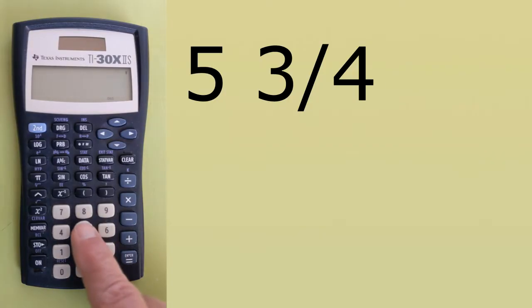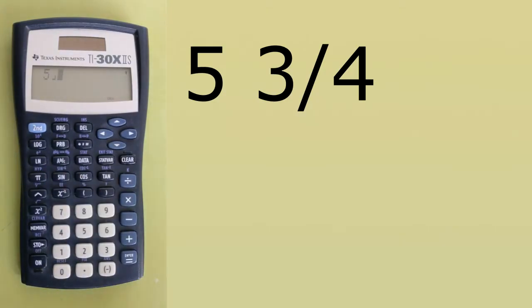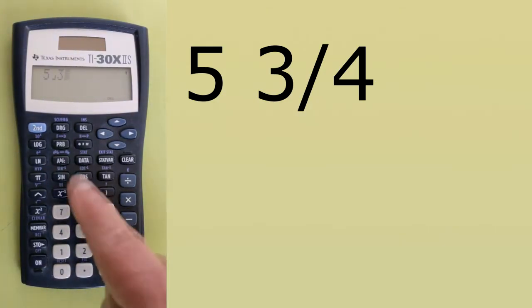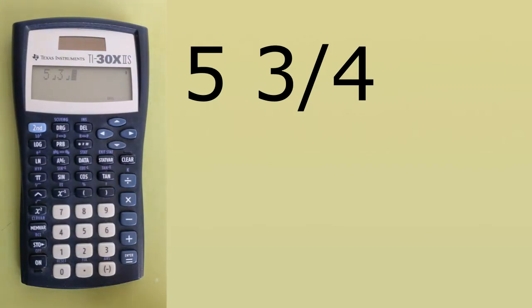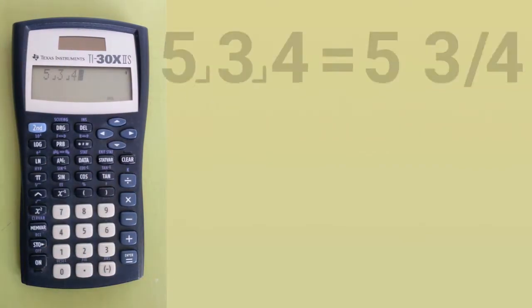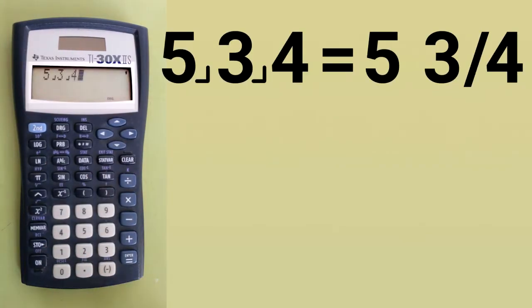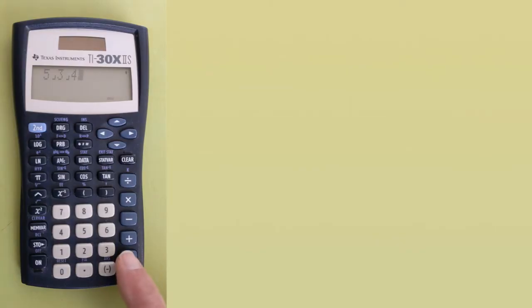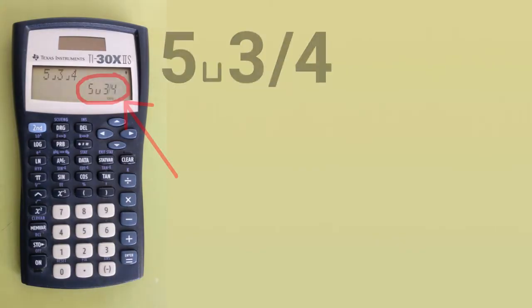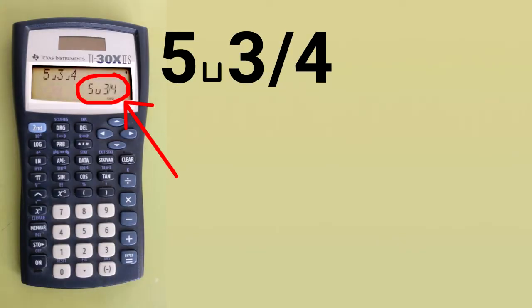Enter a 5, press the fraction button, enter a 3, press the fraction button, enter a 4. That represents the number 5 and 3 fourths. Press the enter button to see how this type of fraction will display. You get a 5, then this symbol, and the fraction 3 fourths — this is 5 and 3 fourths.